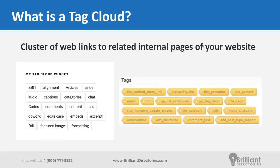Tag clouds do have some SEO value whereby you're internally linking to your most popular pages, which helps boost their value on your site. For a while they were overused — people were using tag clouds with hundreds of keywords. The benefit now is that small SEO value from linking to your most popular pages, letting Google know those pages are important. But the bigger benefit is the convenience factor it adds for your members by providing useful links that aren't necessarily in your main menu while they're browsing your site.